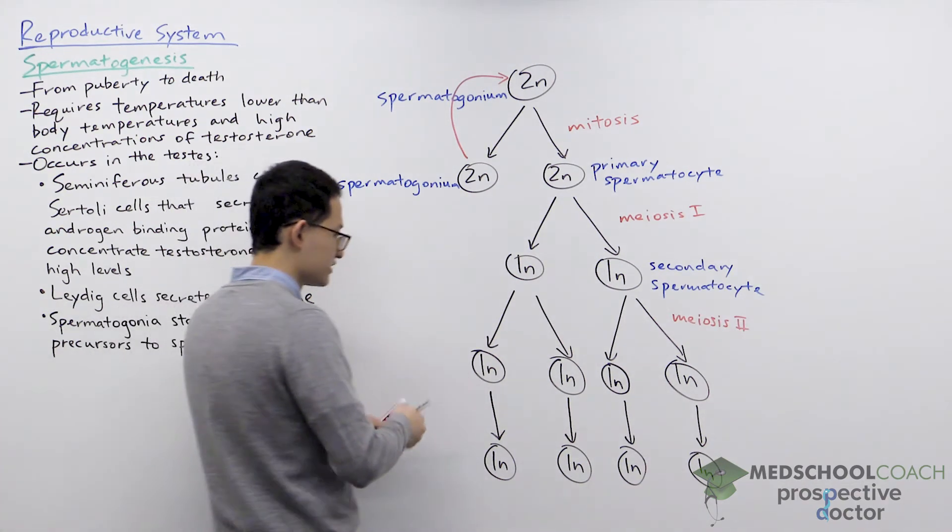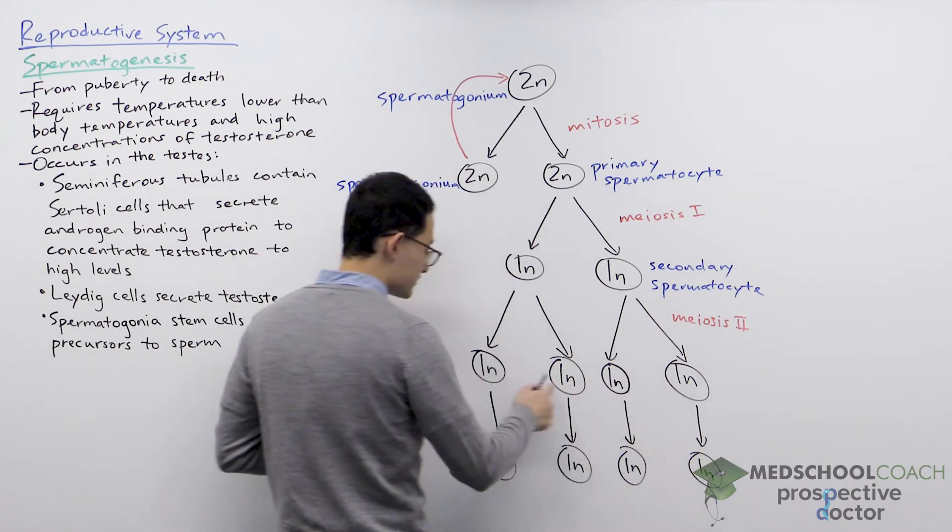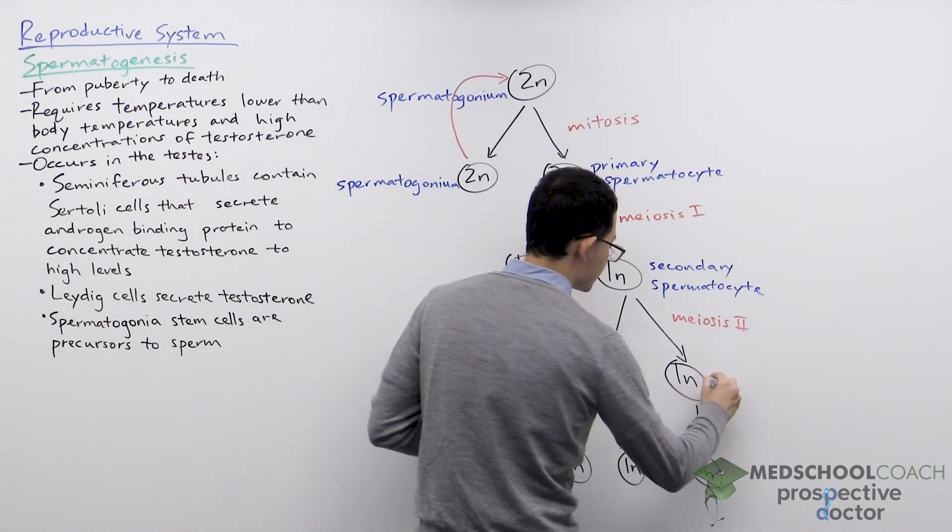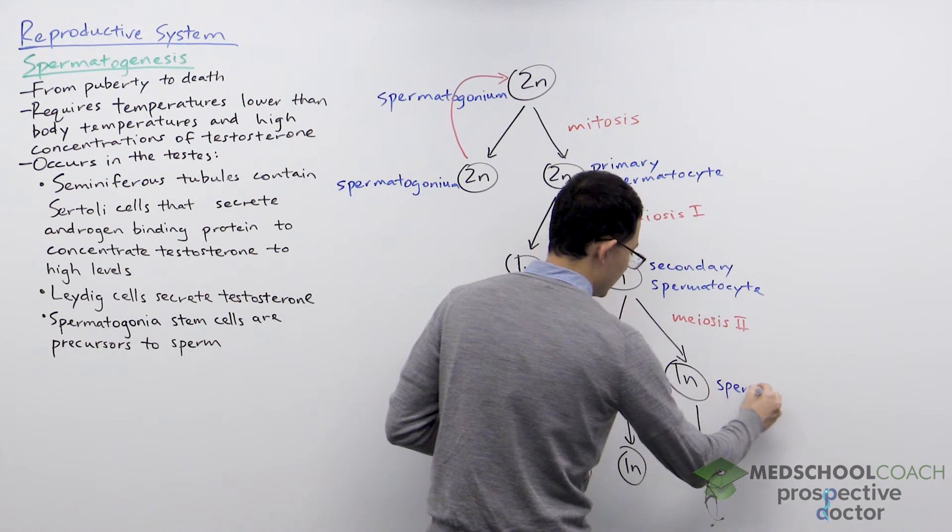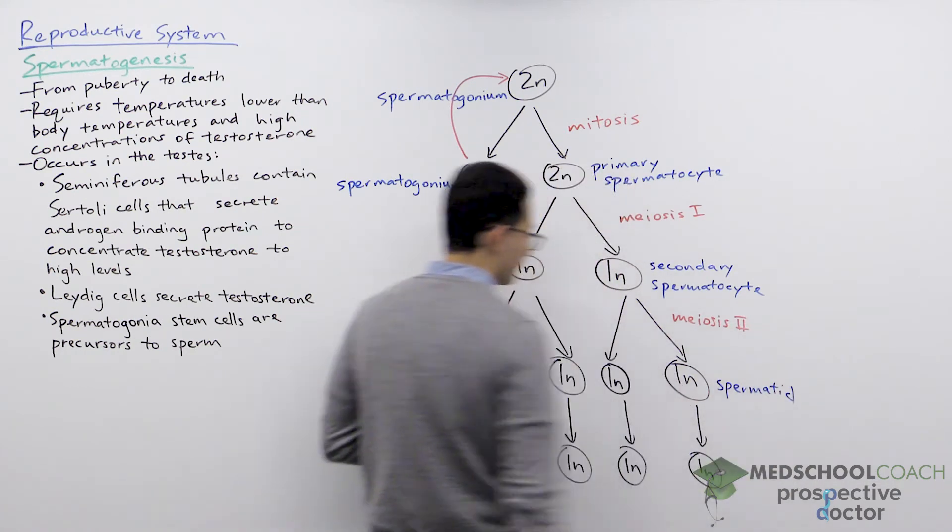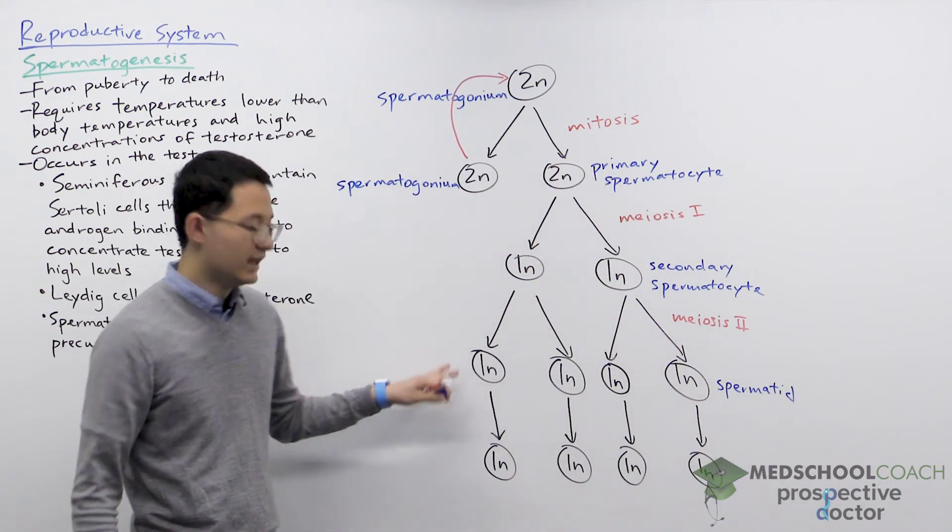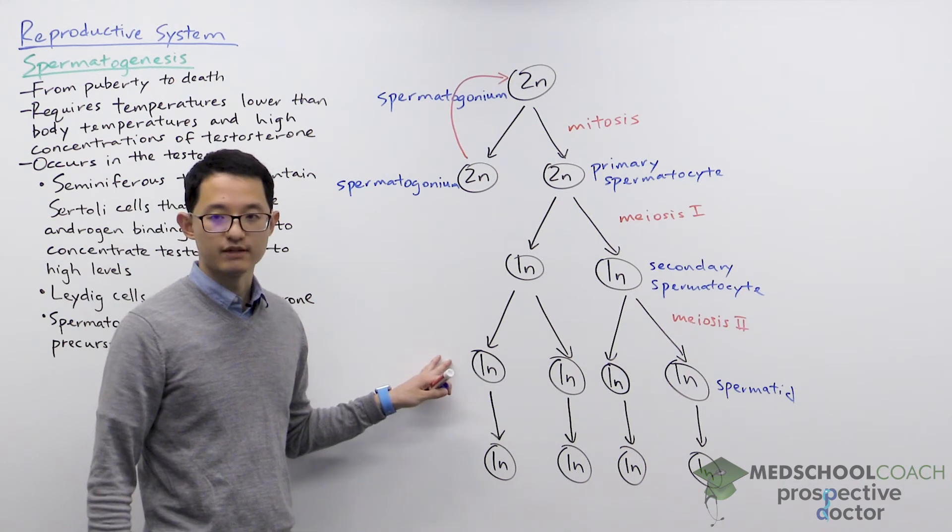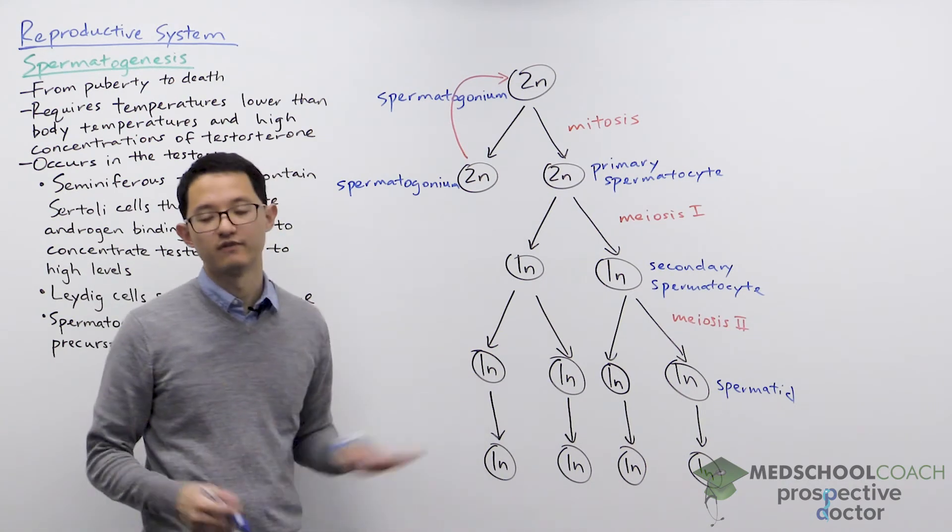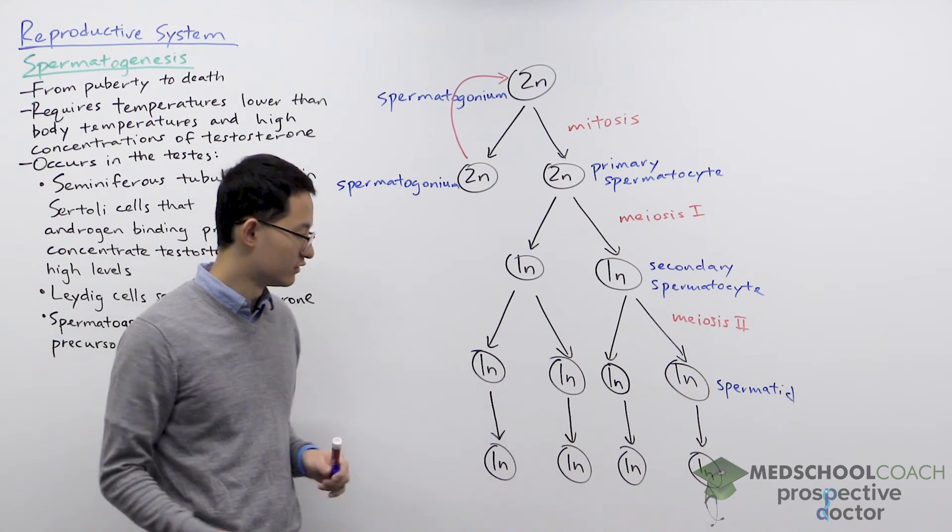Now after meiosis II has occurred, these four resulting daughter cells are called spermatids. Spermatid refers to the fact that these cells are immature sperm cells. They're not fully mature—for instance, they're not motile, they can't move.